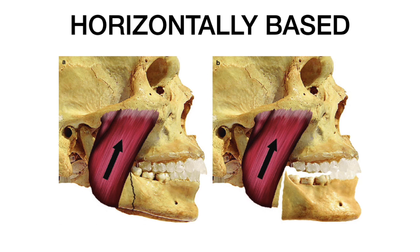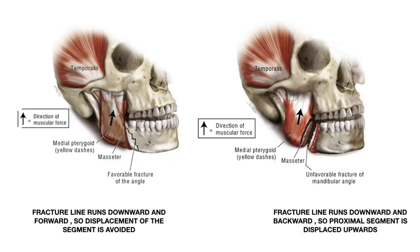For horizontally favorable fractures, the direction and pull of the masseter, which is superior, results in the close reduction of the mandible with no displacement of the proximal fragment compared to the distal fragment that holds the teeth. In the unfavorable case, the pull of the masseter displaces the proximal fragment with respect to the distal fragment, resulting in superior movement — an example of a horizontally unfavorable fracture.